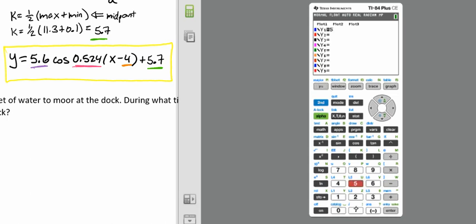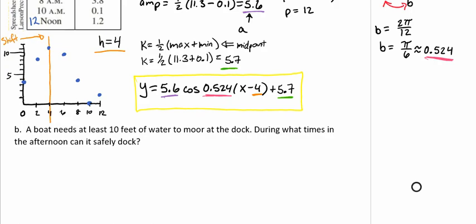We're going to pull up our graphing calculator and plug in our equation. We'll go to y equals and 5.6 times the cosine of 0... we're going to have to distribute this out to make sure we can actually plug this in. So we'll take our equation, 5.6 times the cosine of 0.524 times x minus 4 plus 5.7.